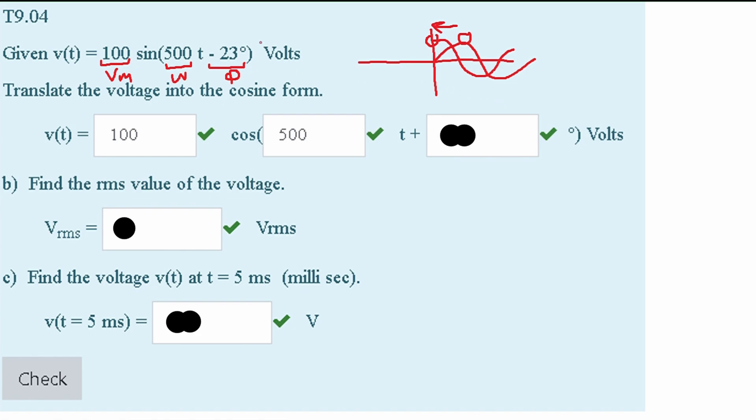Which is why whenever we have a sine value like this for our phase angle, we have to subtract or add a negative 90 degrees to it. So if we have negative 23 degrees from our sine, plus a negative 90 degrees, we are going to get negative 113 degrees. And this is going to be the answer for part A.